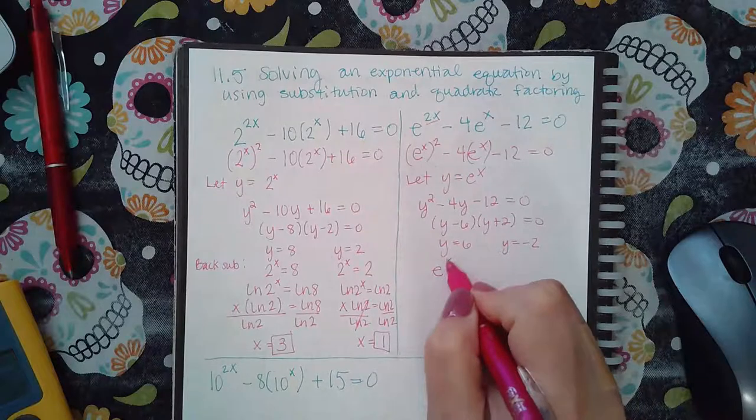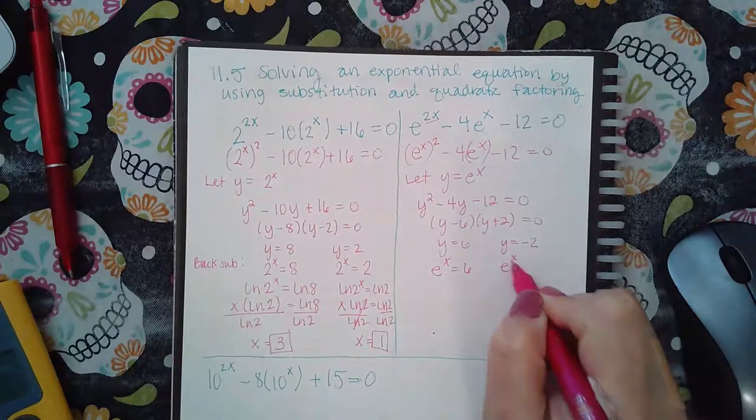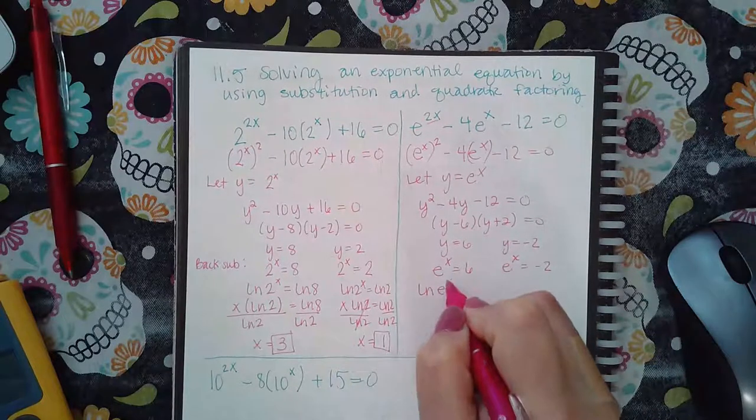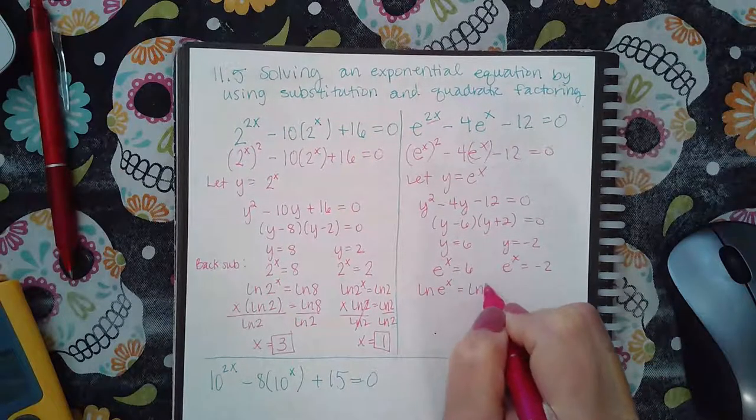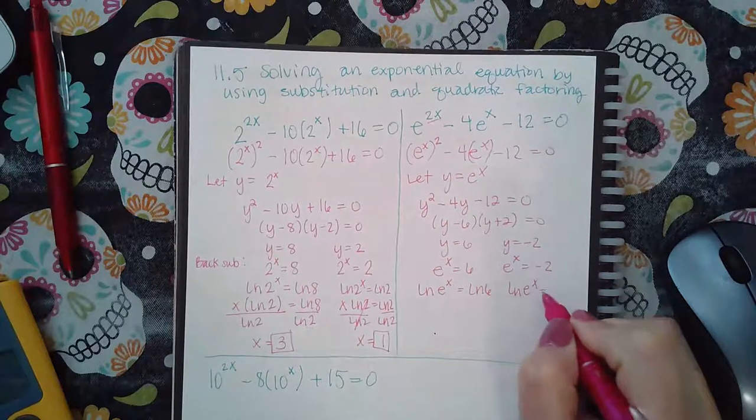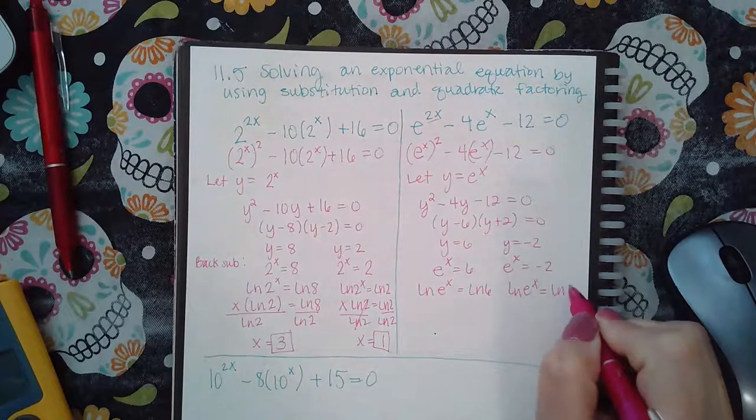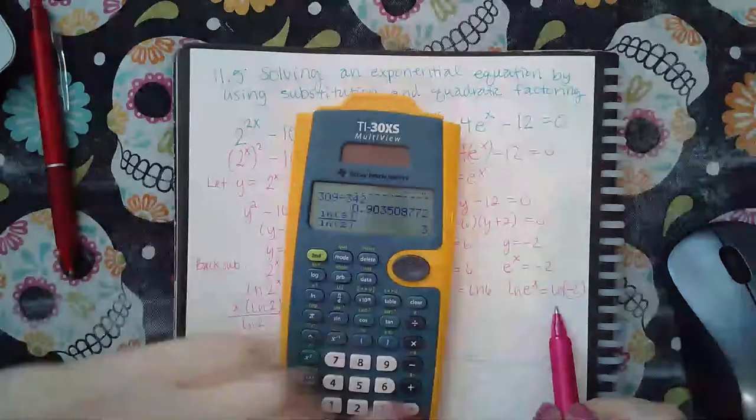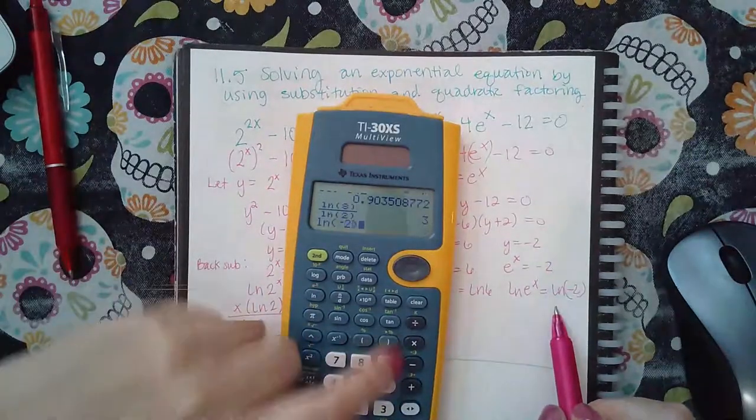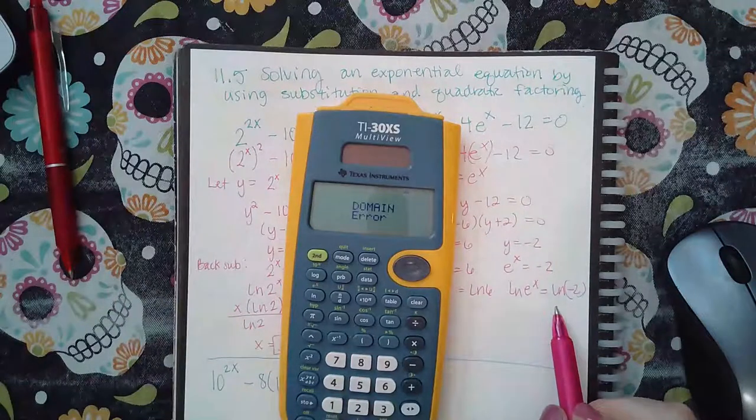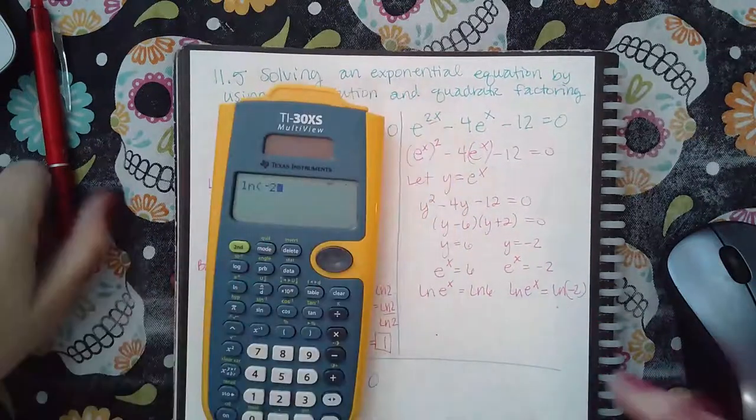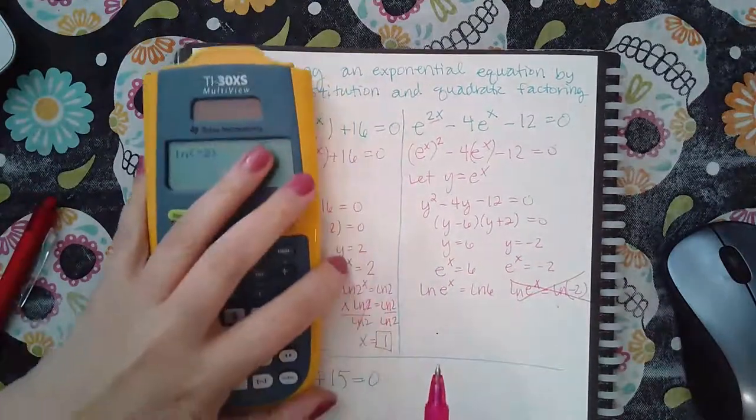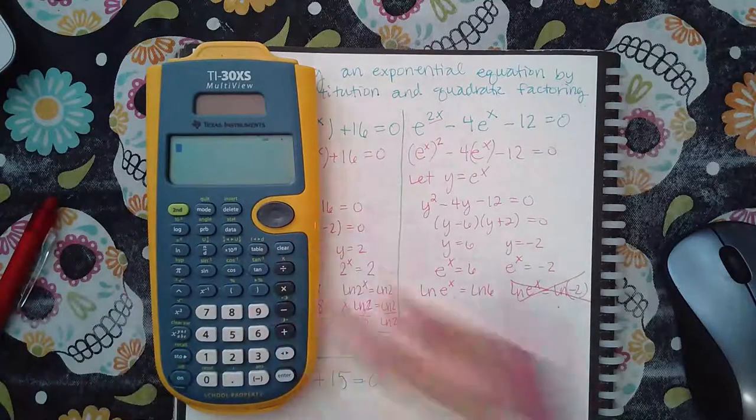So it's e to the x that equals 6, it's e to the x that equals negative 2. And then when you take the ln on both sides, this one you can't type in your calculator. ln, remember your arguments can never be negative. And it tells me error. So this one I can't solve any further because you have an ln with a negative argument. And you can never have a negative argument.